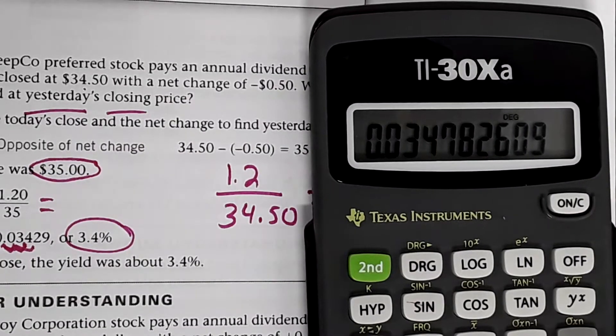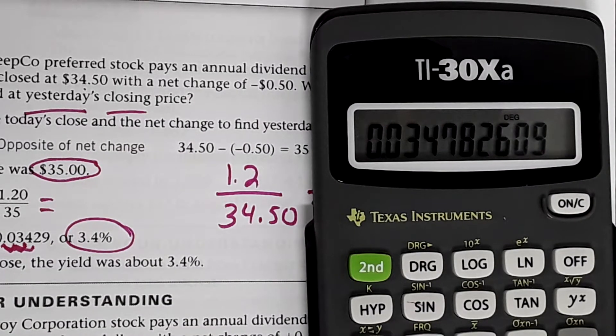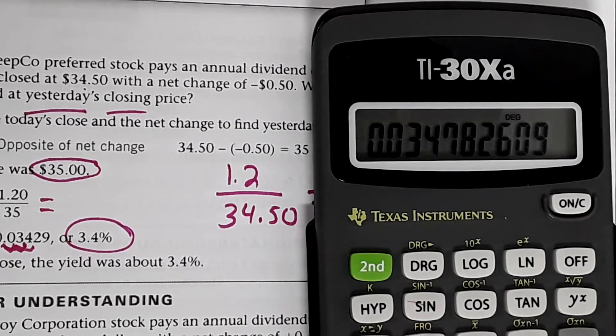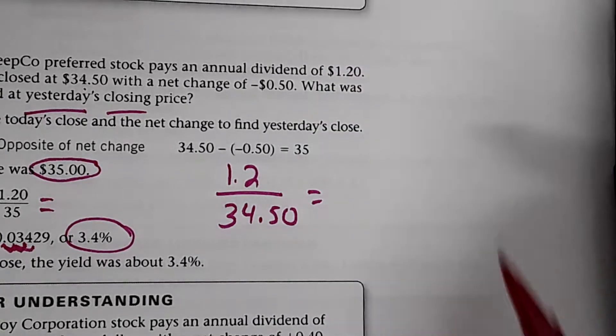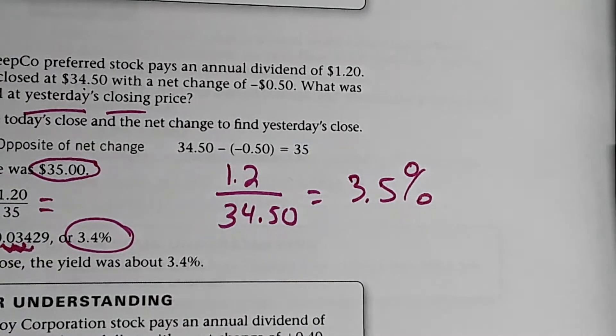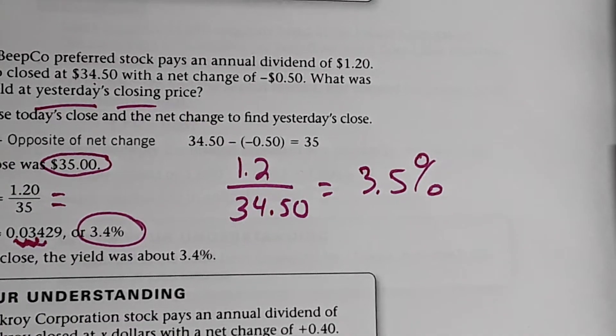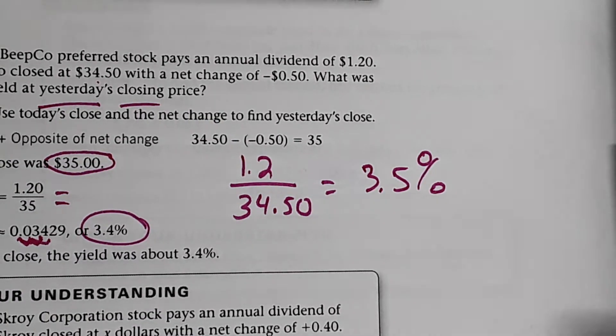If I move the decimal two places between the three and the four, the four would get rounded up because of the seven. So see the yield changed just slightly from one day to the next.